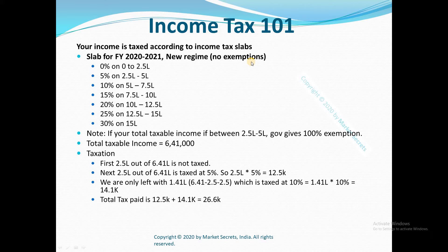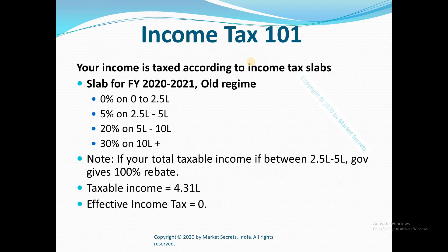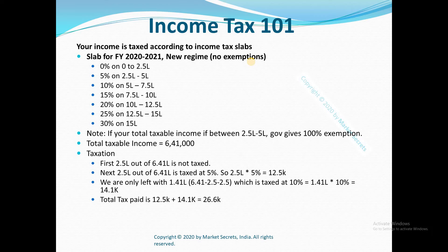You need to consider all the factors like your total income and your deductions, and then make a call on which regime to opt for. There are a lot of online calculators available as well. But in simple terms, if you don't want to submit any proofs, show any investments, or claim any deductions — in simple words, if you are too lazy — you can opt for new regime. And if you are totally into investments and claiming all the exemptions like HRA, LTA and all those, you can opt for old regime. But new regime is generally useful only for people who don't want to claim deductions.